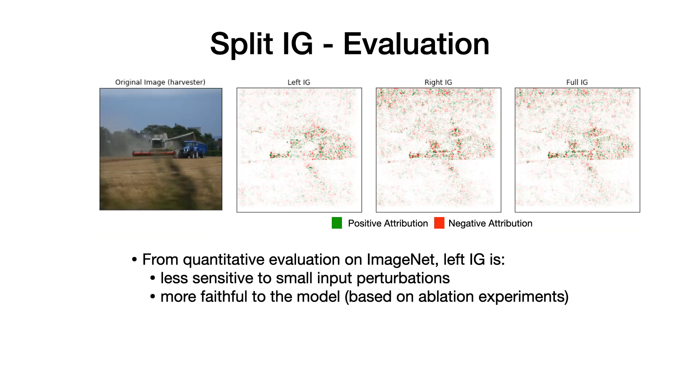The next question we explore is whether only considering left IG, where the output changes substantially, results in better attribution results. We investigate this qualitatively and quantitatively on ImageNet classification models and find that left IG is less sensitive to input perturbations and more faithful to the model based on ablation experiments, suggesting that the attributions are improved.